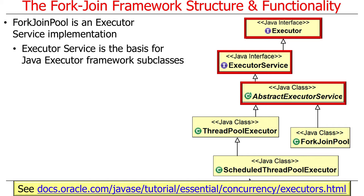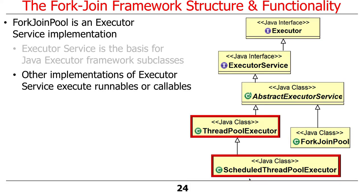A lot of this came around in JDK 5 and then some other stuff was added later. You have core interfaces — the Executor and ExecutorService — which are the building blocks of everything. Some implementations execute Runnables or Callables. ThreadPoolExecutor runs Runnables or Callables in a pool of threads. ScheduledThreadPoolExecutor does this based on the passage of time. We're not going to talk much about those here.